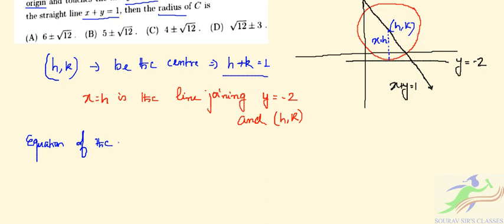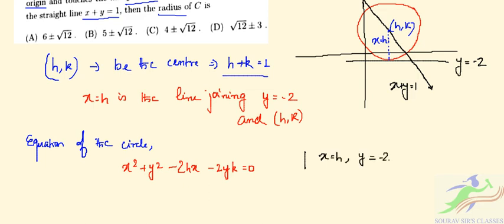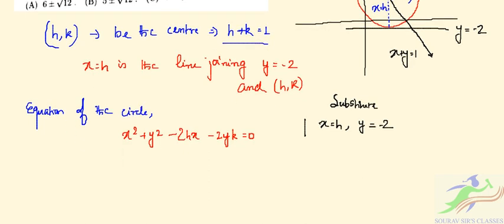Now let's set up the equation of the circle. The general equation can be written as: x² + y² - 2hx - 2ky + c = 0. Since the circle passes through the origin, we substitute x = 0 and y = 0. Also, we substitute the tangency point x = h and y = -2 into the equation.